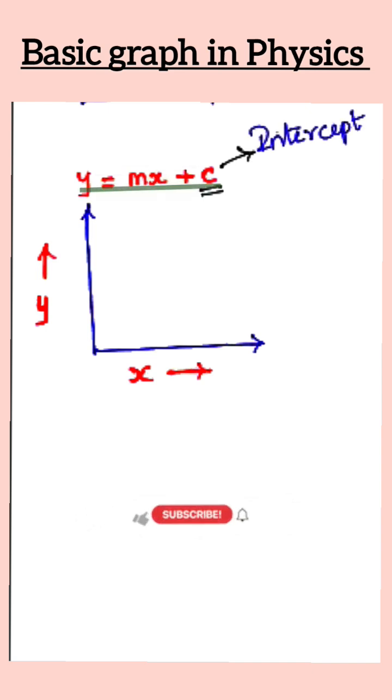y equals mx plus c is going to be a straight line. It is going to be a straight line, but the straight line won't be passing through the origin. It will be starting somewhere above the origin.